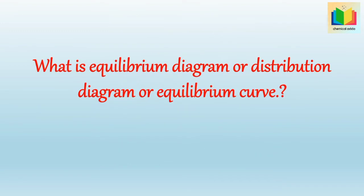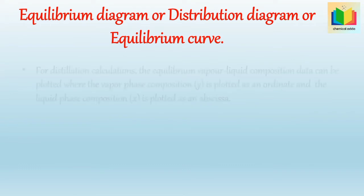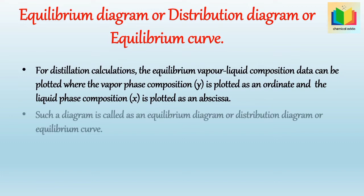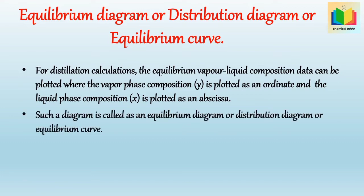Next question: what is the equilibrium diagram, or distribution diagram, or equilibrium curve? For distillation calculations, the equilibrium vapor-liquid composition data can be plotted where the vapor phase composition (Y) is plotted as ordinate and the liquid phase composition (X) is plotted as abscissa. Such a diagram is called an equilibrium diagram, or distribution diagram, or equilibrium curve.